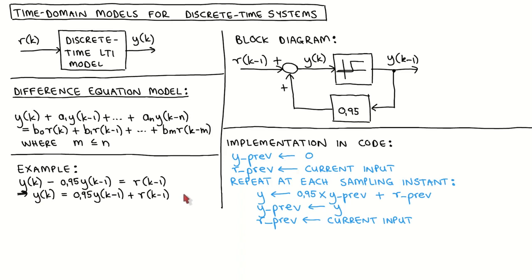We can equivalently represent the difference equation by a block diagram using only gain, summation, and unit delay blocks. This block denotes a unit delay, which means that the input signal is delayed by one time step to form the output signal. If we apply the output signal Y(k) on the input of this block, the output of the block is the output signal delayed by one time step, Y at K-1. We can implement this equation by drawing that Y of K is equal to 0.95 times Y of K-1 plus R of K-1.